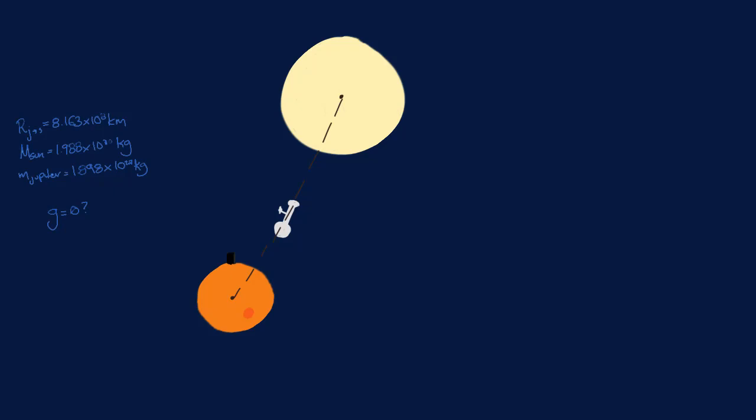Now on a line between the Sun and Jupiter, the fields are already pointing directly away from one another, so we just need to concern ourselves with the field strength.